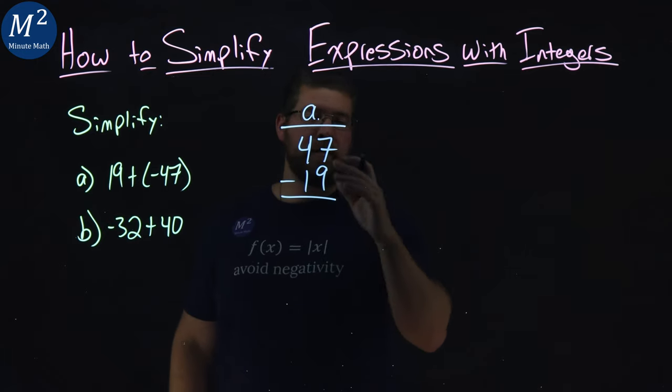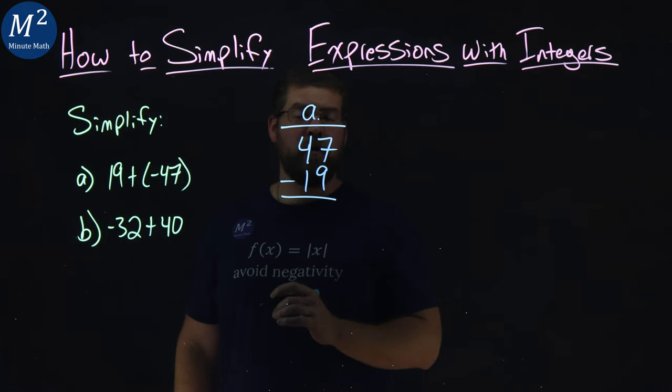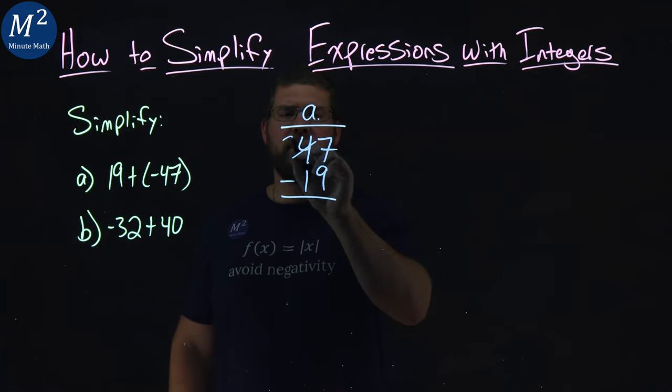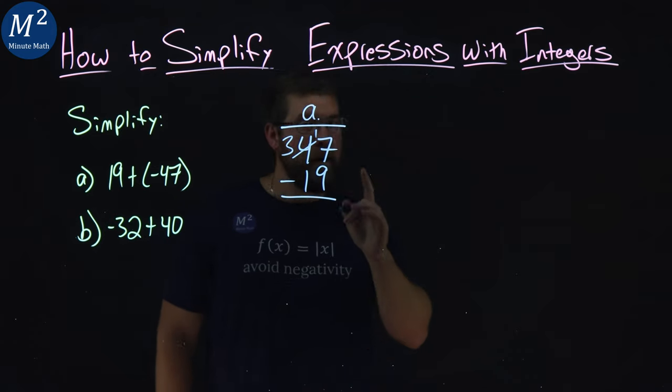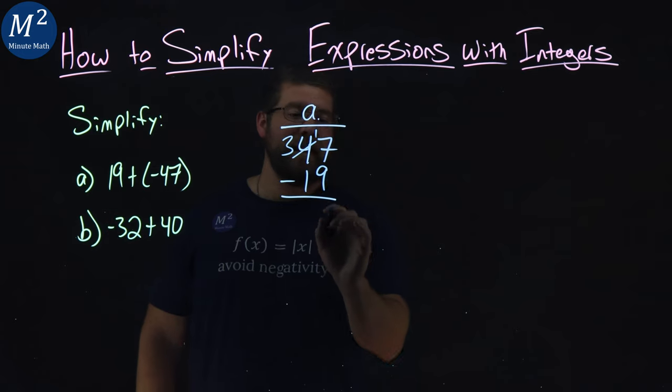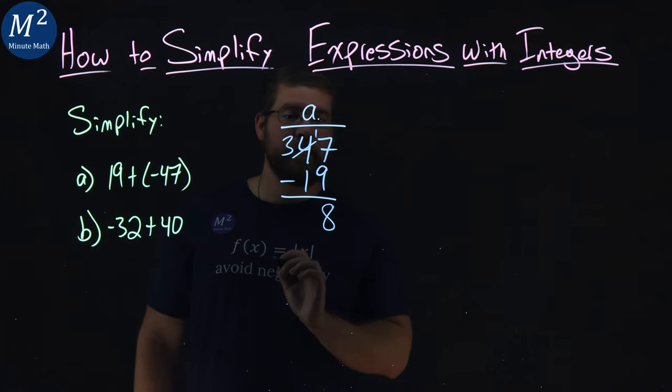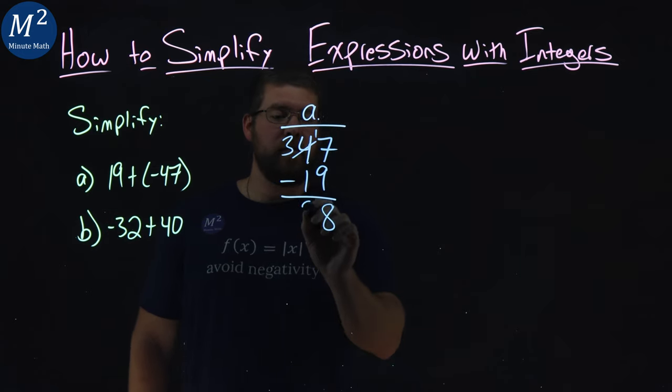7 minus a 9, well, we can't do that. We have to draw from the 4. 4 turns into a 3, and a 7, we bring a 1 there. 17 minus a 9 is a much easier answer, and that gives us an 8. From there, 3 minus a 1 is a 2.